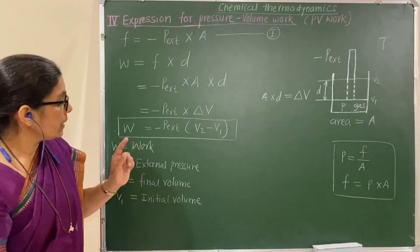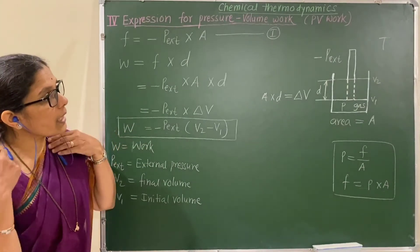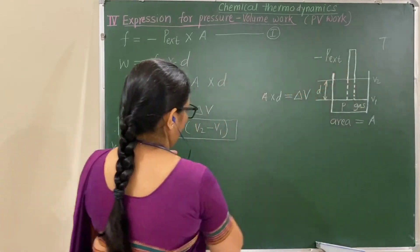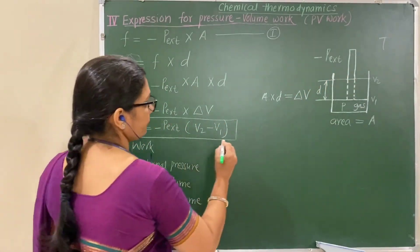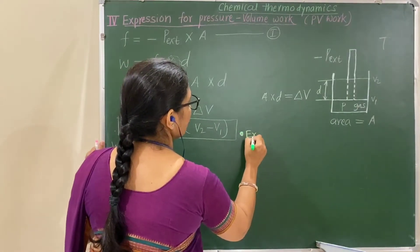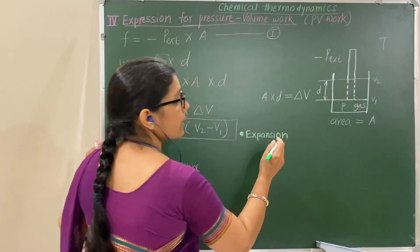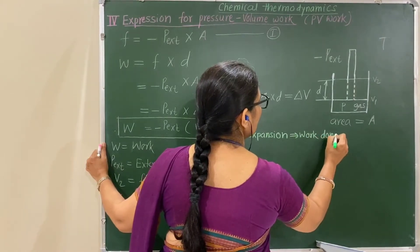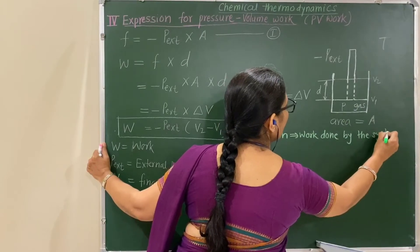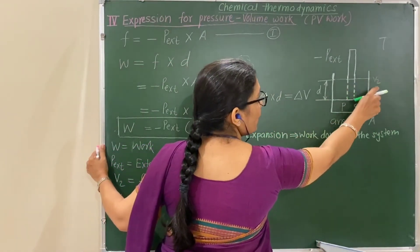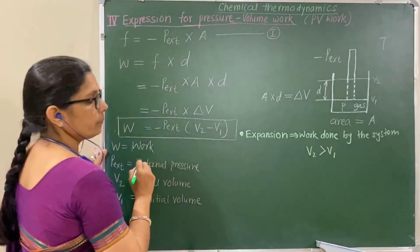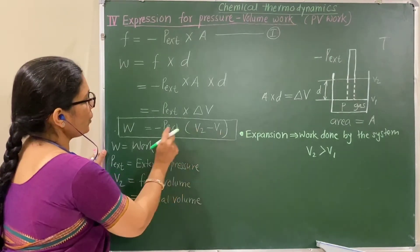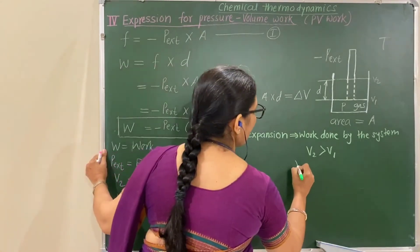Now consider the sign of this work. For expansion, work is done by the system. V2 is greater than V1. In the formula W = minus P_external × (V2 − V1), if V2 is greater than V1, the value (V2 − V1) is positive, so multiplied by the negative sign, W becomes negative.